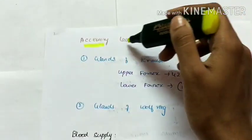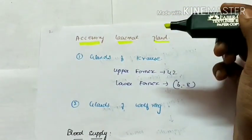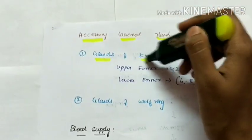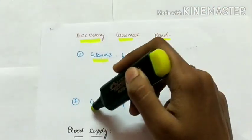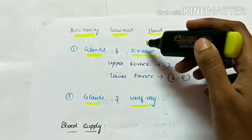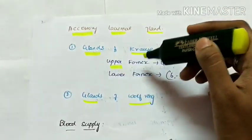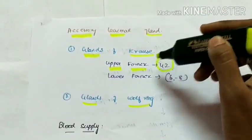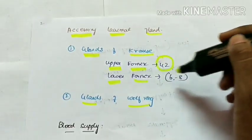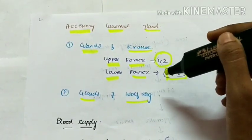There are two accessory lacrimal glands: the glands of Krause and the glands of Wolfring. The glands of Krause are present on the upper fornix, 42 in number. They are also seen in the lower fornix but fewer, 6 to 18 in number.